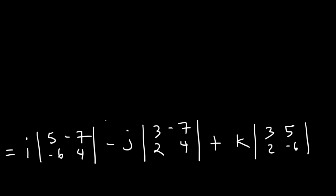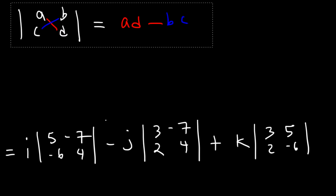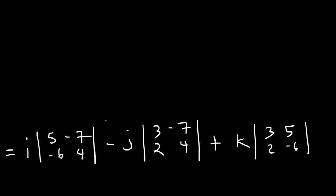Now we need to be able to evaluate the determinant of a 2 by 2 matrix. So let's say this is A, B, C, D — it's going to equal the product of A times D, minus the product of B times C. That's how you evaluate the determinant of a 2 by 2 matrix. So let's do that for each of the 2 by 2 matrices we see here.